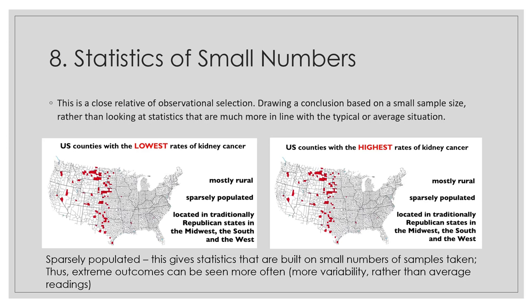You also have to be careful of statistics of small numbers, which can give very skewed observational results that won't hold on average. With very small statistical numbers, you could claim both of these as being true: U.S. counties with the lowest rates of kidney cancer are mostly rural, sparsely populated, located in traditionally Republican states in the Midwest, South, and West — but also U.S. counties with the highest rates of kidney cancer are mostly rural and sparsely populated in those same states. If an area is sparsely populated, statistics are built on small sample numbers and you can get extreme outcomes — you're likely to have more variability with small numbers.